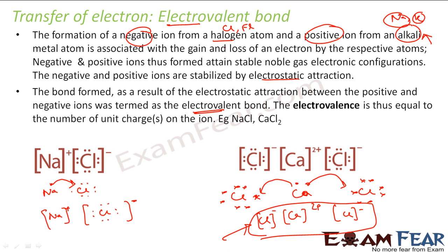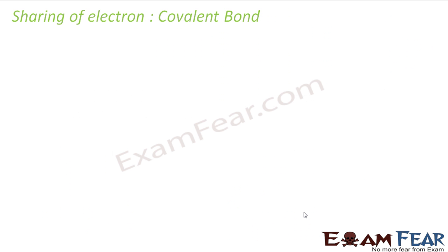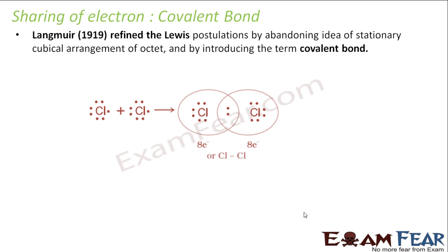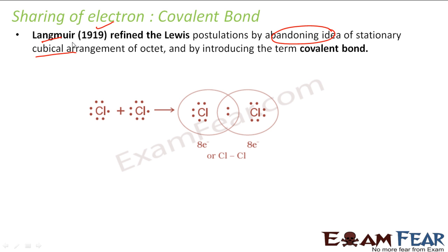Lewis's approach is able to explain this kind of bond, including sharing of electrons. This postulation was done in 1916, but abandoning the idea of cubical arrangement. This theory was then redefined in 1919 by Langmuir.